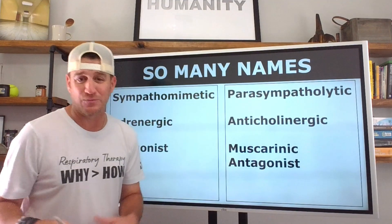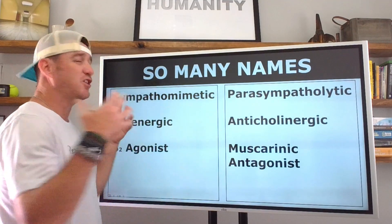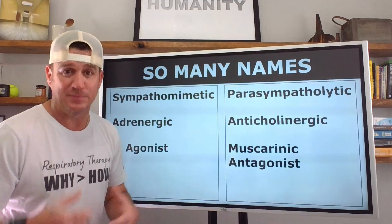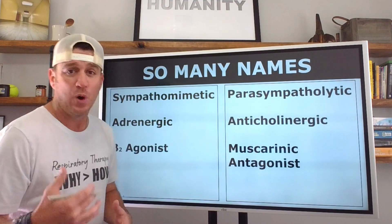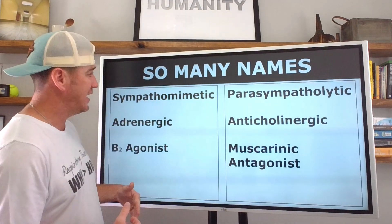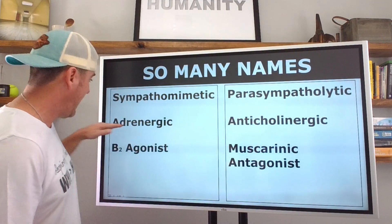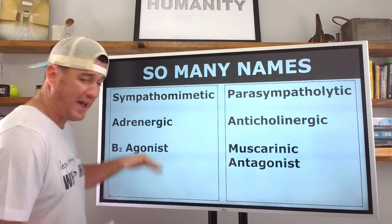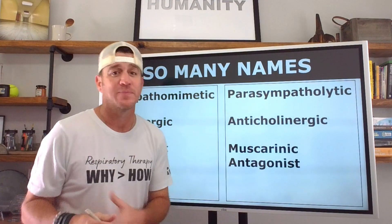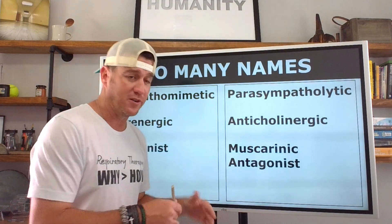But for today, we're talking all about bronchodilators. The thing is, there are so many different names and you have to understand these names — you have to know where they come from and what they are telling you. There are names like sympathomimetic, parasympatholytic, anticholinergic, muscarinic antagonist, adrenergic, and beta-2 agonist. There are so many — it's so confusing, right? Well, there's a reason all these names exist, and I'm going to show you that right now.